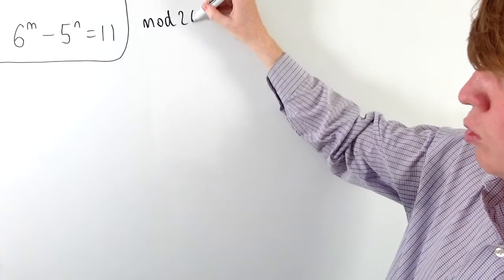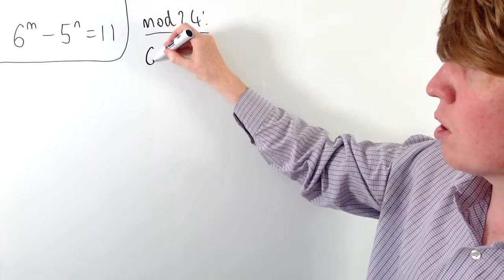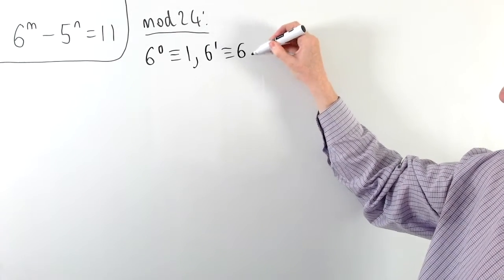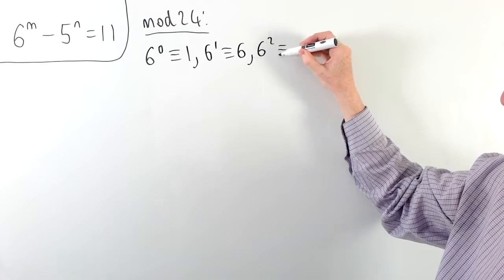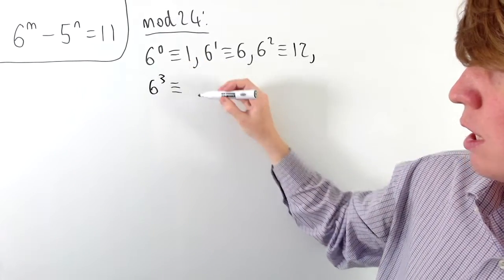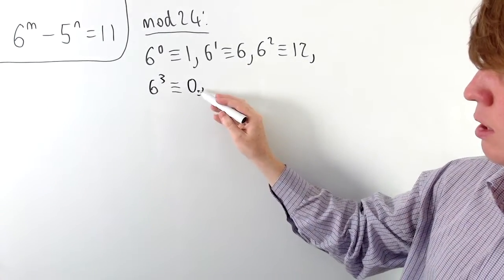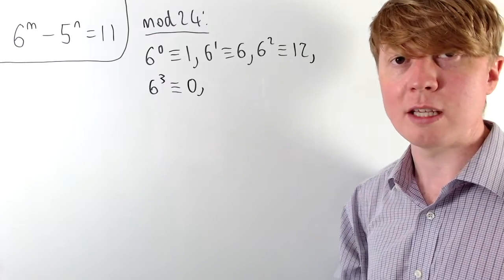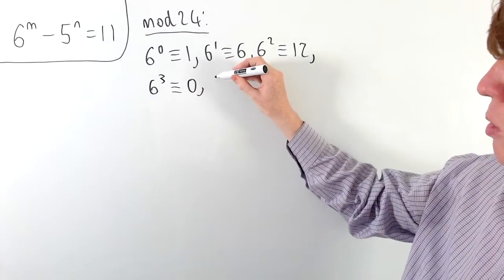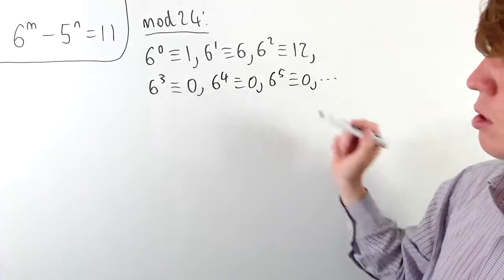If we think about the equation modulo 24, first look at what happens with powers of 6 modulo 24. 6 to the 0 is 1, so equivalent to 1 mod 24. 6 to the 1 is 6. 6 squared is 36, which is equivalent to 12 mod 24. Then 6 cubed is 216, which is actually a multiple of 24, so we get 0. All powers of 6 beyond 6 cubed are multiples of 24, so they're all equivalent to 0 modulo 24.